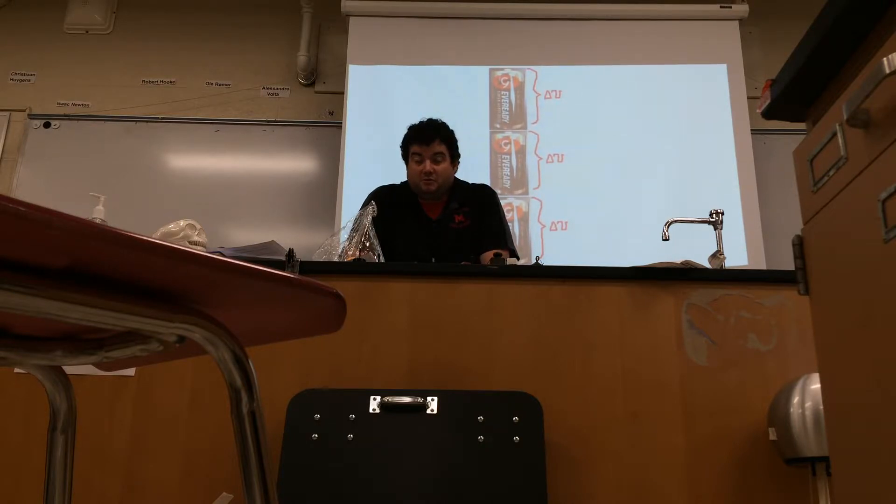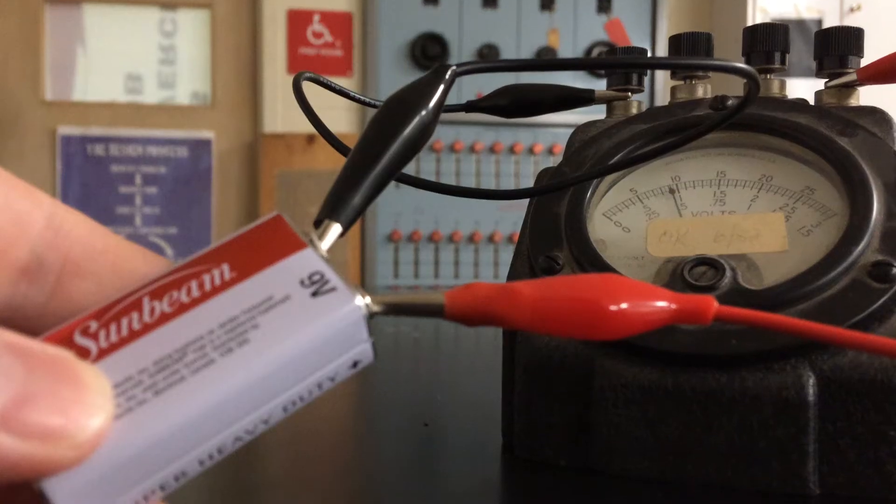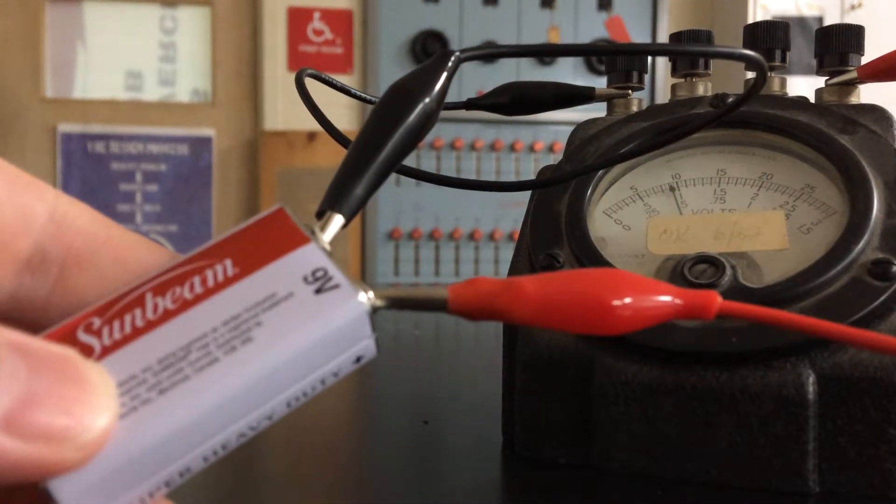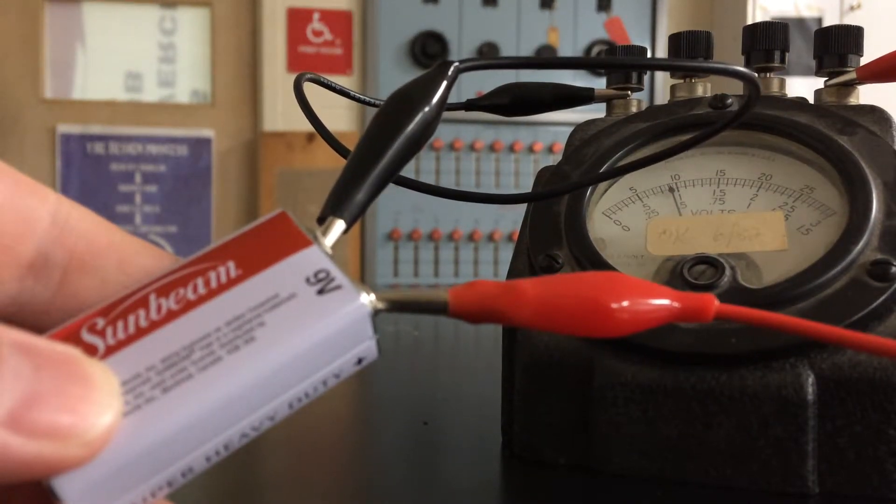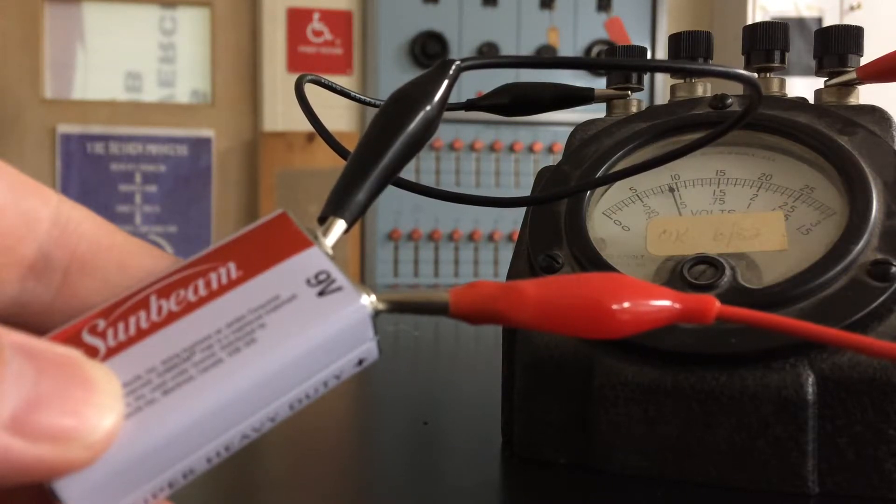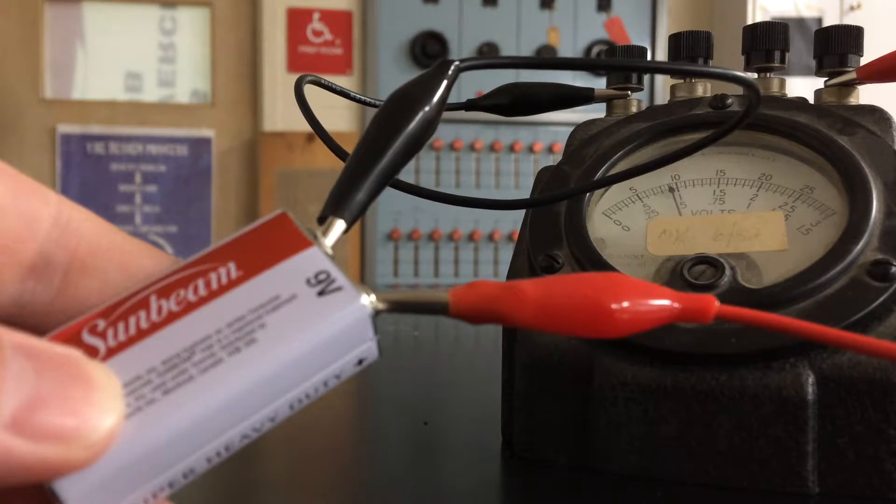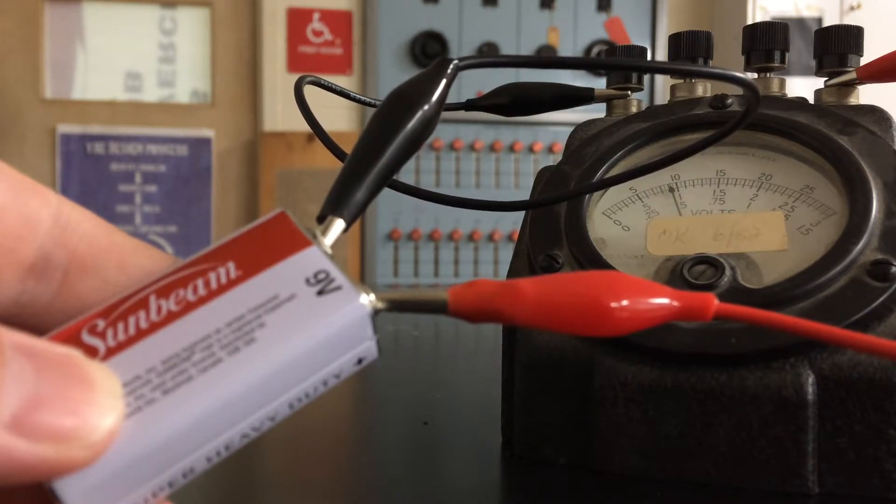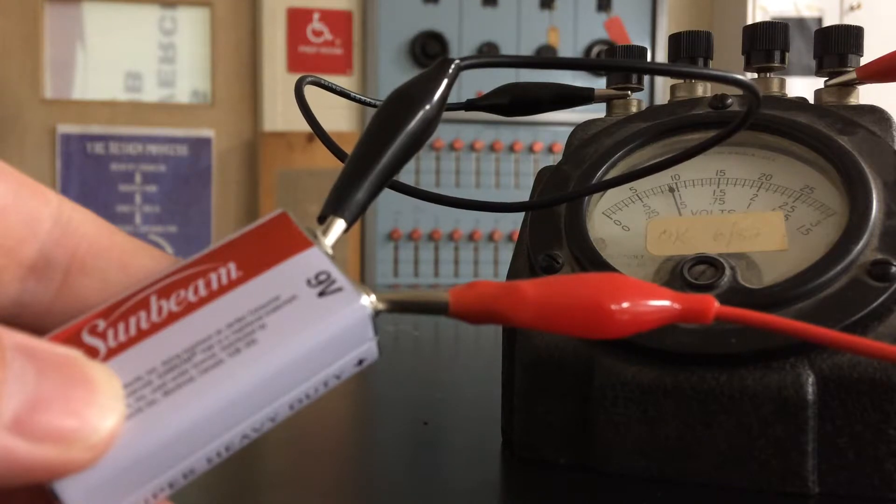We never want to give them too much, though, because then they might damage the system. The meter is confirming that this 9-volt battery is indeed giving us 9 joules per coulomb. Each of our charges is given 9 joules, which means it's good for sending charge through with a certain amount of energy.